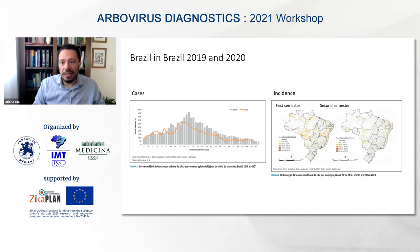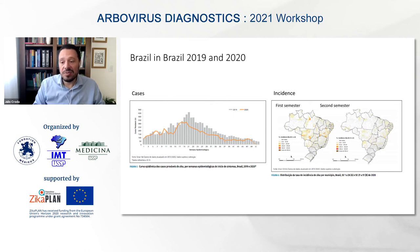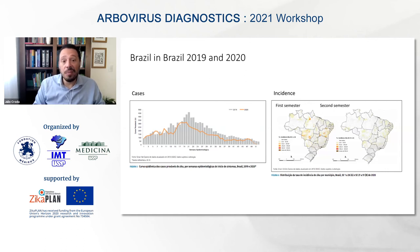Comparing incidence between the first and second semesters of 2020, there are few cases — mostly in the first semester — concentrated in Bahia, the same state with the majority of chikungunya cases, and some cases in Mato Grosso in the Middle West.